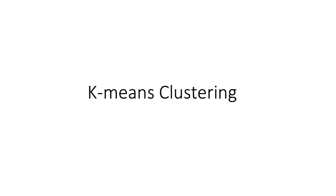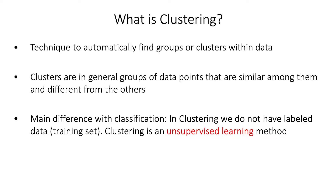In this tutorial we will see the k-means clustering method. Clustering is a technique to automatically find groups or clusters within data. Clusters are groups of data points that are similar among them according to some specific predefined criteria. The main difference between clustering and classification is that in clustering we do not have labels. We don't have a training set — we need to figure out a way to cluster the data without using any label information. This is why clustering is considered an unsupervised learning method.